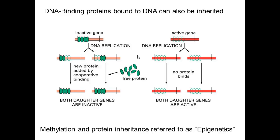Events at the protein level can be inherited as well. If a gene is turned off and there are many copies of repressor proteins in a promoter region, when the DNA is replicated, the bound protein will sort stochastically, ensuring both daughter cells get some of the protein. Aided by cooperative binding, this serves as a nidus for additional proteins to bind at the promoter — so the protein being bound at a promoter is inherited to daughter cells. Methylation of DNA and protein being bound to DNA being inherited is the generic term for what's referred to as epigenetics.